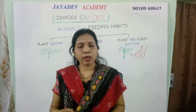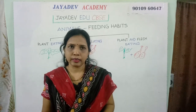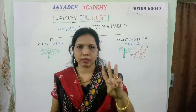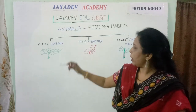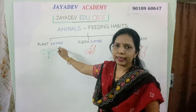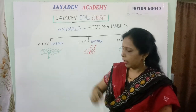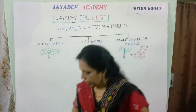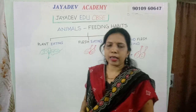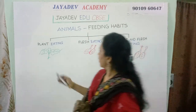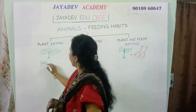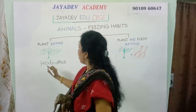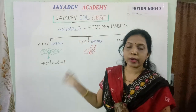According to their food habits, these animals are divided into three types. One is a plant-eating animal. They eat only plants, and such animals are called herbivores or herbivorous animals.